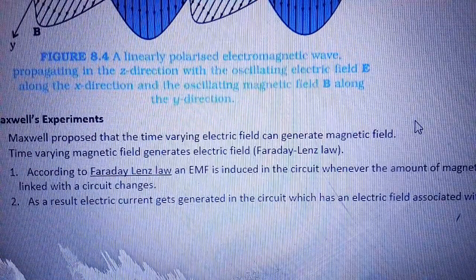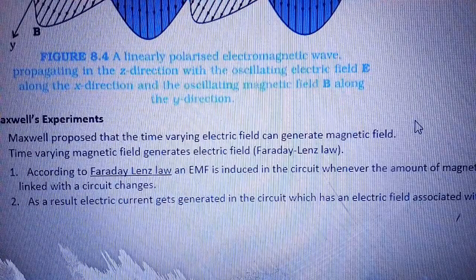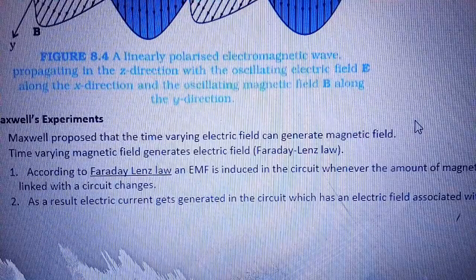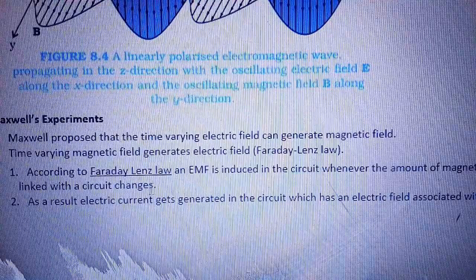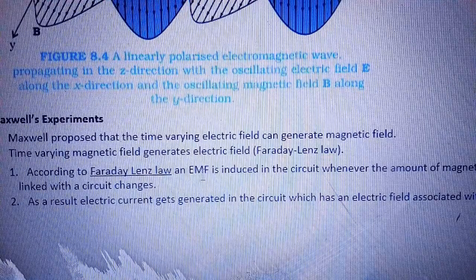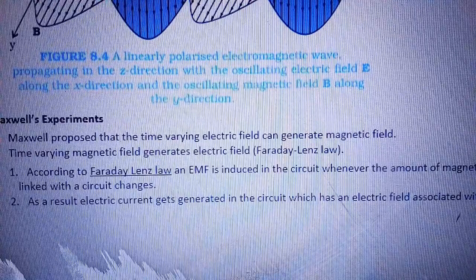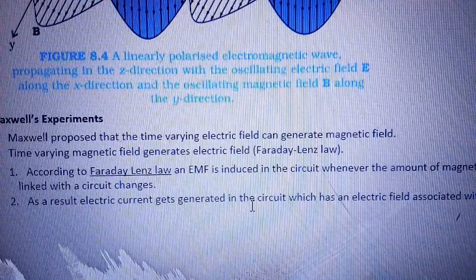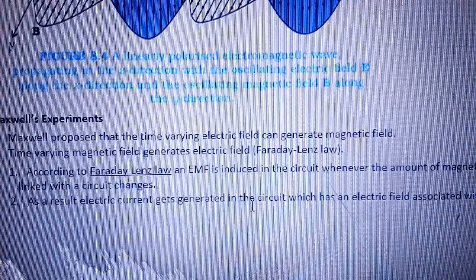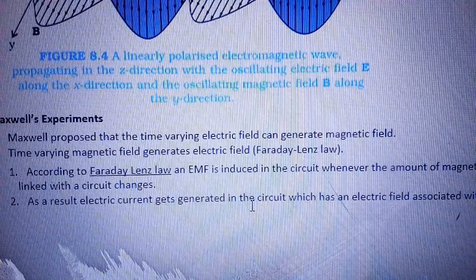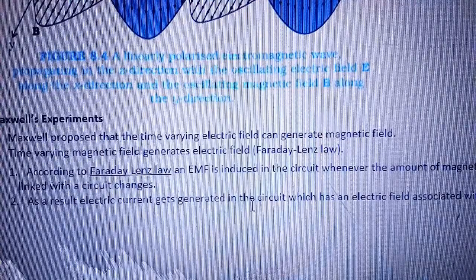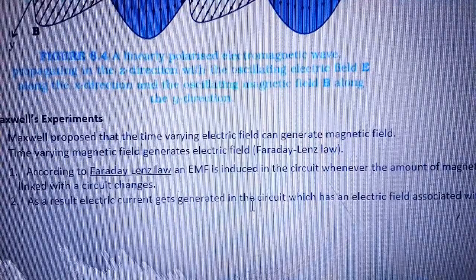According to Maxwell, Faraday, and Lenz — इन तीनों के combinations से यह बात आती है — पहली बात यह कि अगर electric field vary करेगा तो magnetic field भी produce होगा, और magnetic field vary करेगा तो electric field भी produce होगा। Faraday-Lenz law के according: an EMF is induced in a circuit whenever the amount of magnetic flux linked with the circuit changes।